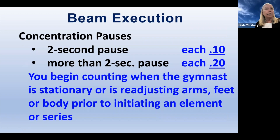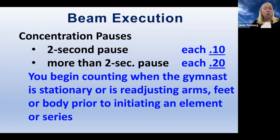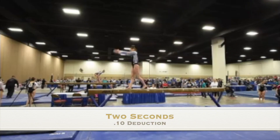Beam execution — this is not new. We've had this for several years. At the beginning, we did have a lot of deductions because gymnasts were waiting too long before starting their series, leap series, or dismount. The rule: if they pause for two seconds before initiating a skill, it's a flat one-tenth deduction. If it's more than a two-second pause, it's a flat two-tenths. We begin counting when the gymnast is stationary or is readjusting arms, feet, or body prior to initiating an element or series. It's obvious when they're setting up for a skill, but we do want to see their rhythm continue throughout the routine.